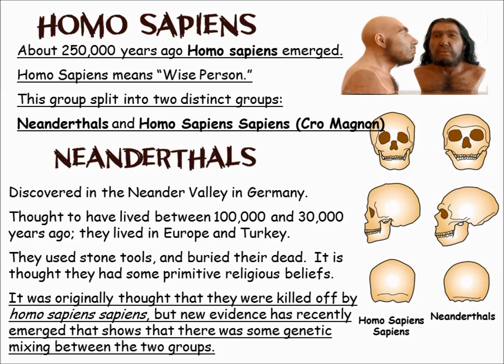How did Neanderthals die out? We know they were in direct contact with some tribes of Cro-Magnon. There is also evidence that they may have been genetically bred out — so some were probably killed, and others simply didn't have superior enough genes to persist.